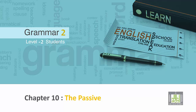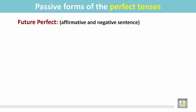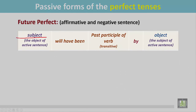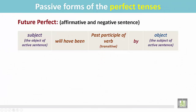Grammar 2 for Level 2 students, Chapter 10: the passive — passive forms of the perfect tenses, future perfect affirmative and negative. See the structure: the sentence begins with the subject, which is the object of the active sentence. Then the helping verb 'will have been' for the future perfect tense. The transitive verb is in the past participle form, followed by the preposition 'by,' and finally the object, which is the subject of the active sentence.